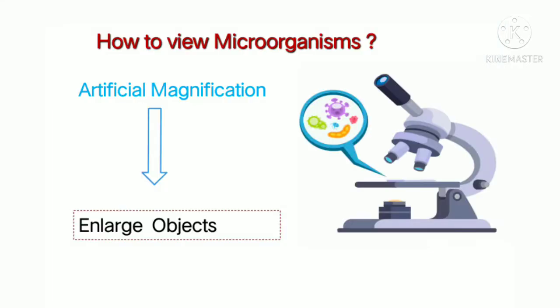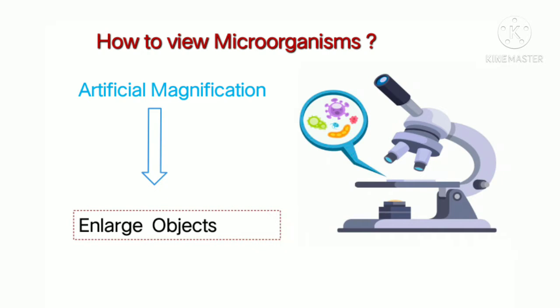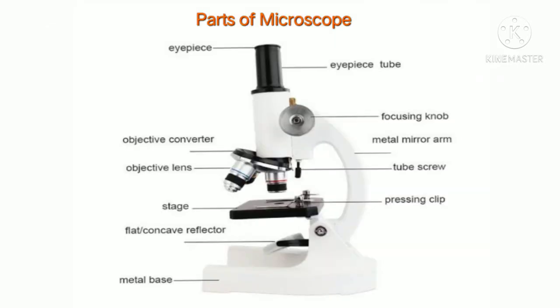To observe microorganisms, we require artificial magnification — meaning a microscope. What does a microscope do? It enlarges the image of an object. Now let's look at the basic parts of a microscope.